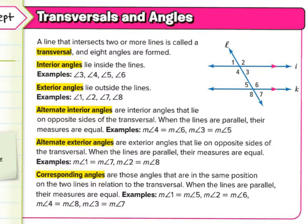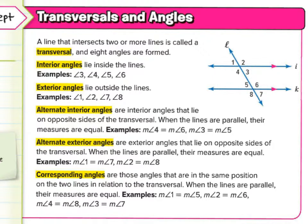Corresponding angles are those angles in the same position on the two lines in relation to the transversal. When the lines are parallel, their measures are equal. Notice it says when the lines are parallel — these lines must be parallel; if they're not, we cannot apply any of these rules. You see how angle seven looks exactly like angle three, and angle eight looks exactly like angle four without moving anything.